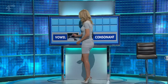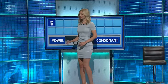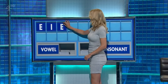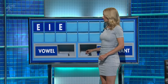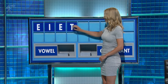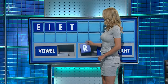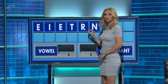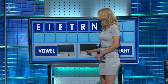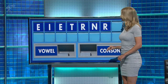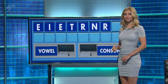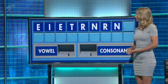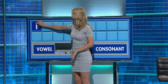A vowel, please, Rachel. Thank you, Yvonne: E. Another: I. And another: E. Consonant: T. And another: R. And another: N. Another, Liz: R. Another: N. Rachel. Thank you, Martin: I.